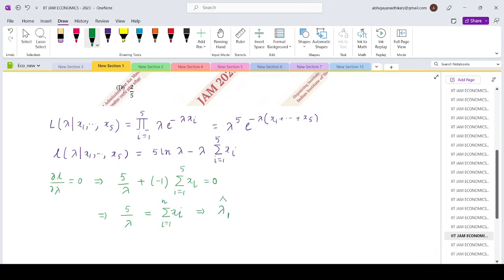What is my lambda hat MLE? 5 by summation small xi, so that would imply 5 by 12.5.